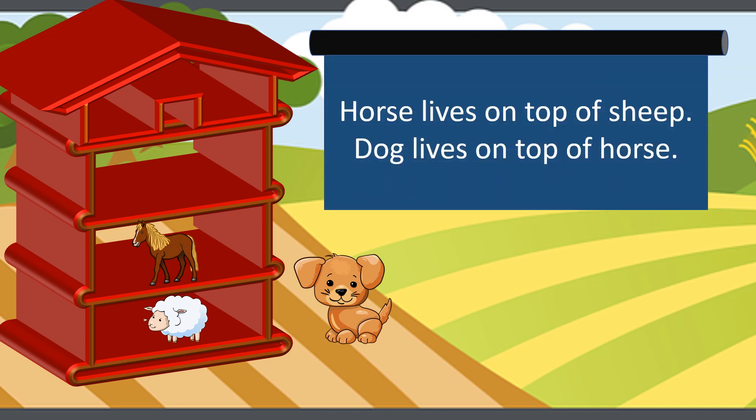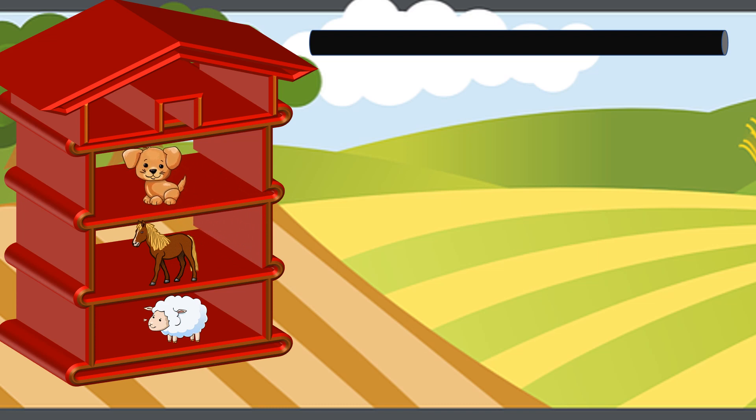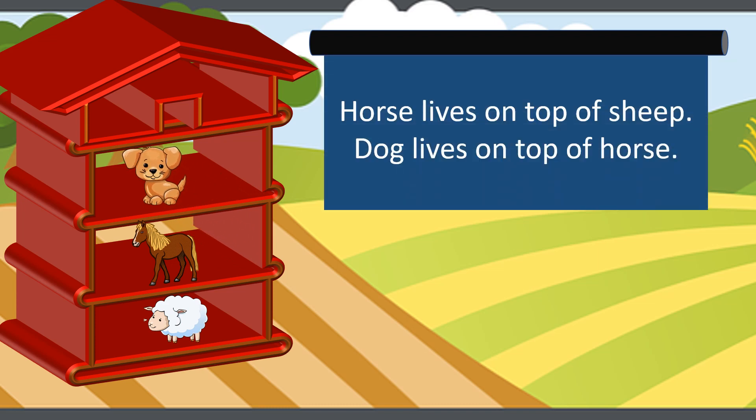This time I have placed the sheep at the bottom. Now I have kept horse on top of sheep, which is correct as per the first sentence. The second sentence says dog lives on top of horse, so let's place the dog now. Dog is on top of horse — we have met the second sentence also. This looks good!